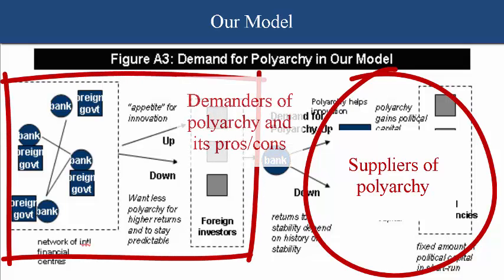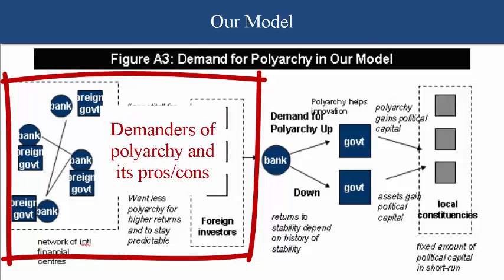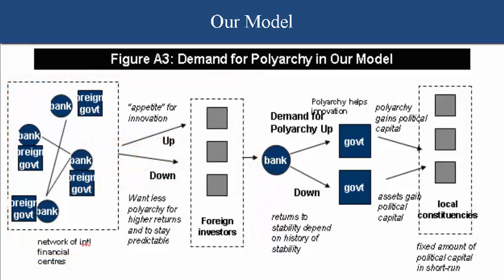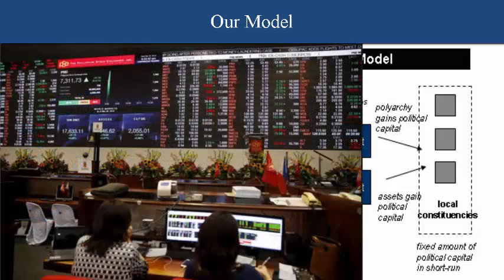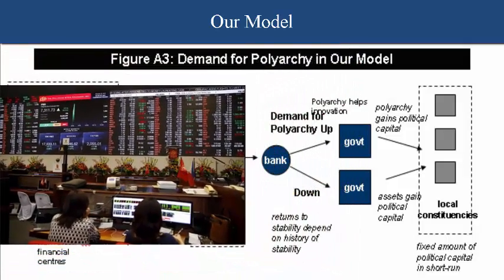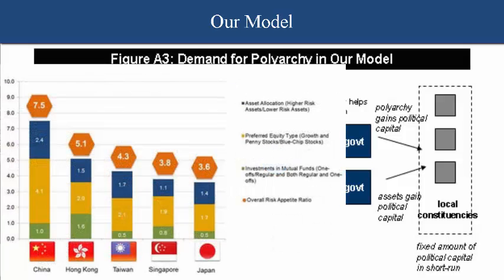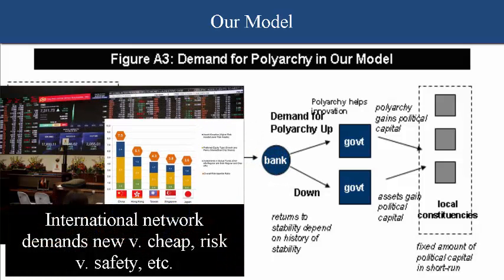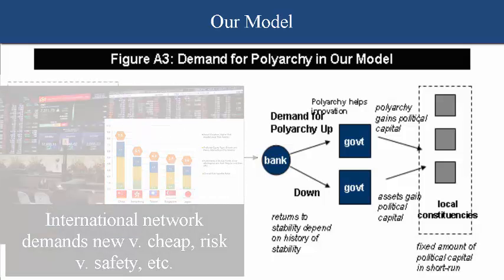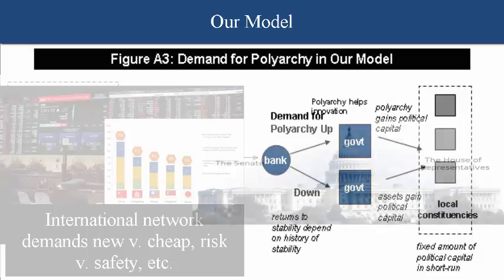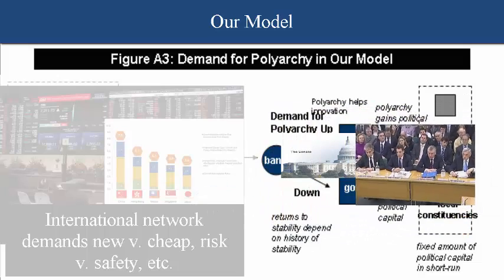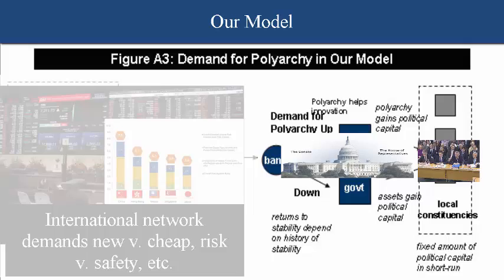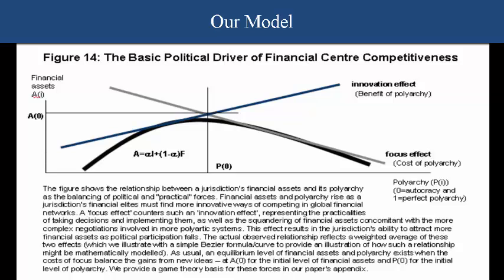Based on the way this game plays out in other jurisdictions in the international financial network, our local banks receive some kind of signal from abroad dictating whether there's an appetite for innovation, or whether investors simply want cheaper finance or finance directed toward a particular policy — whether that be legitimate, ethical, or otherwise. The government's own demand function then balances the political gains from more polyarchy versus the political gains from letting financiers have more capital and power. Figure 14 shows the result of these games playing out across jurisdictions as basically the supply and demand for polyarchy.